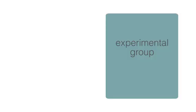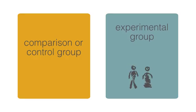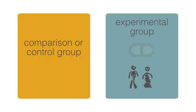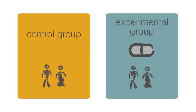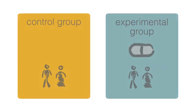In a research study there is usually an experimental group and a comparison or control group. Those who are in the experimental group will get whatever is being researched in the study. Those in a control group will usually get the standard treatment for the condition. If there is no standard treatment, those in the control group might get a placebo that looks the same but is not intended to have the same effect as the experimental treatment, or they might get nothing at all.